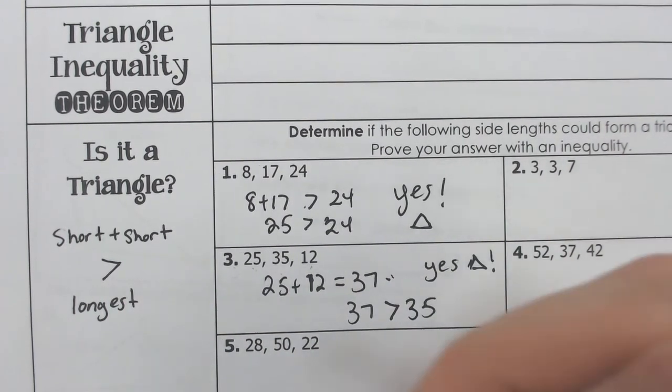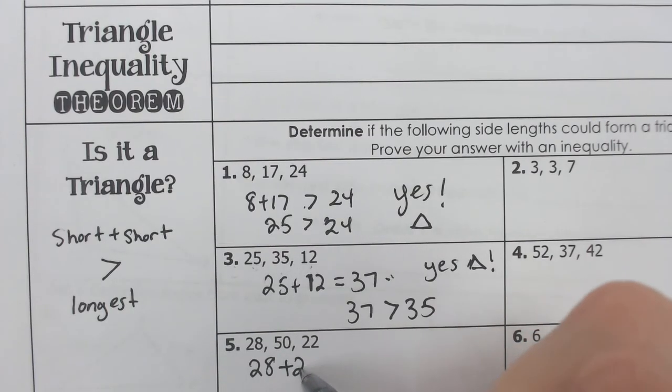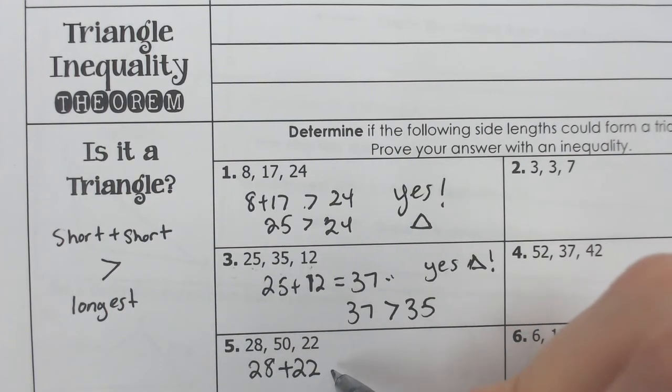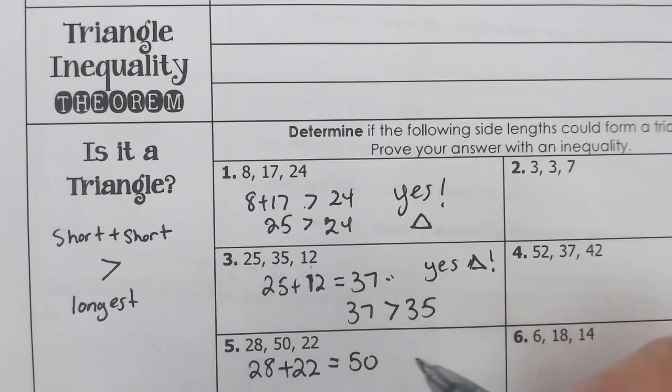Let's try another one. What if we have 28 and 22? Those are the two shorter sides here. Well, if you add those together, you get 50. And is 50 bigger than 50? No.